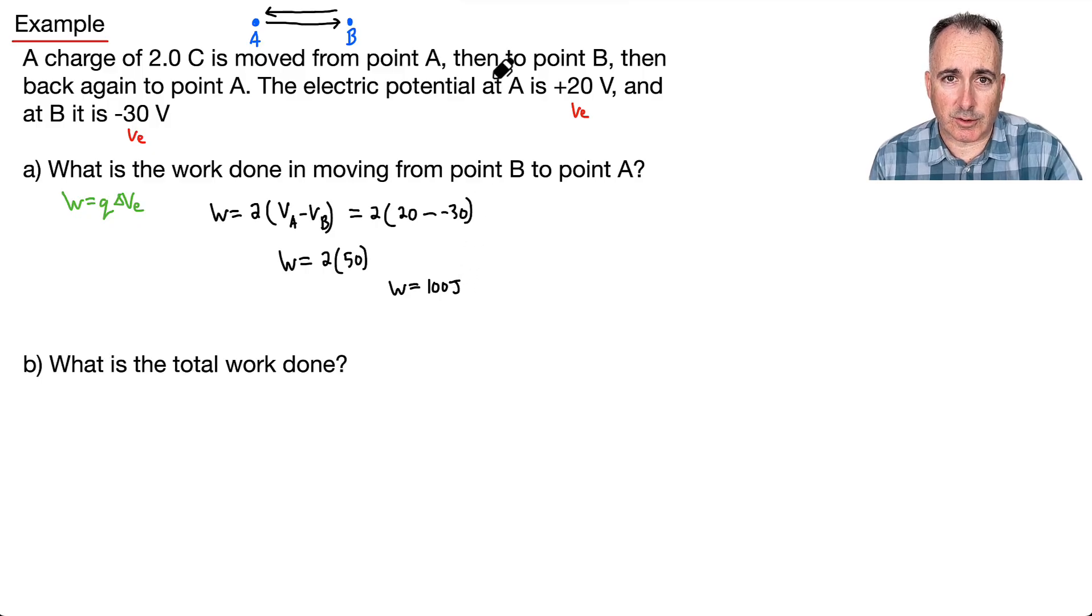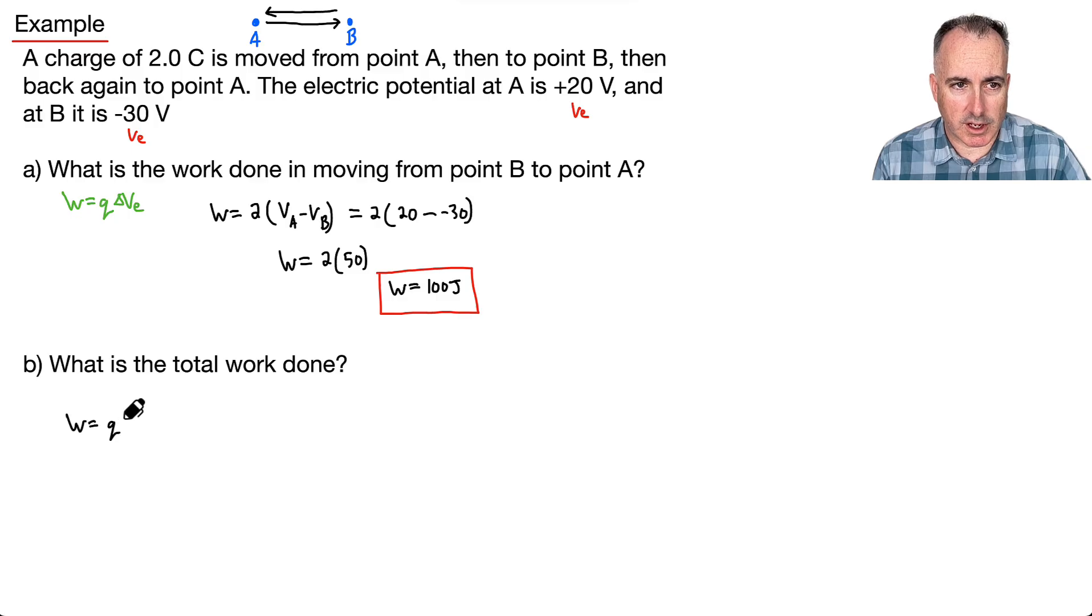So that's actually not so bad at all. Now for the last part right here, let's work it out here. So let's say, what's the total work done? Well, let's see. Remember, the equation is going to be W equals Q times delta VE.